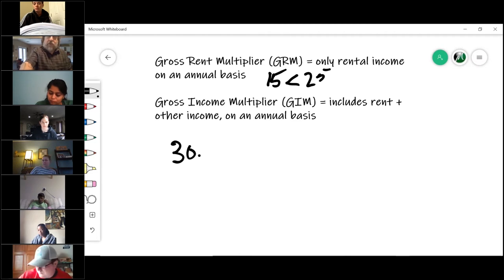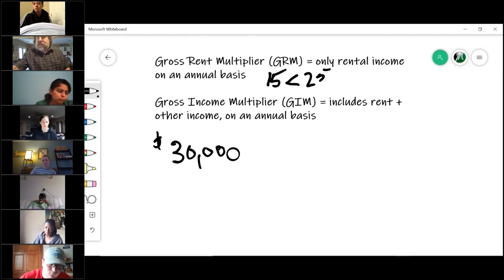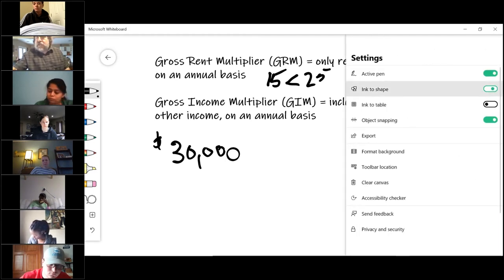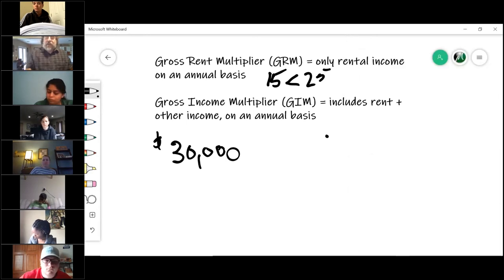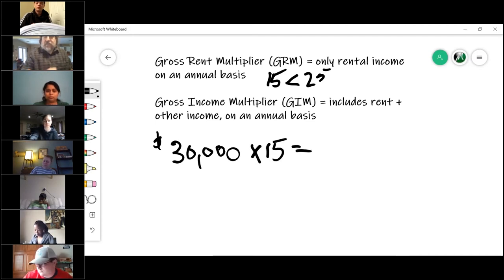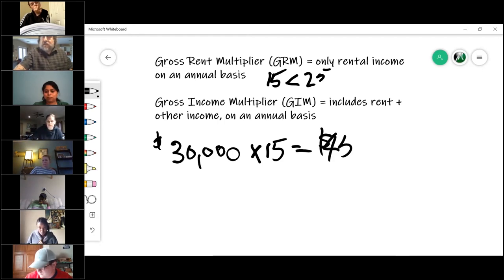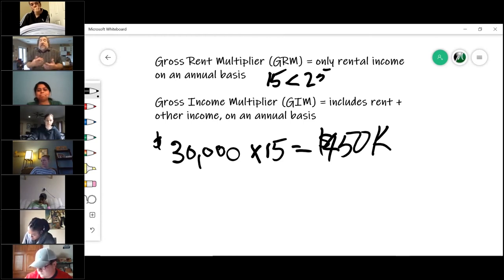That property a minute ago had $30,000 gross income. Now, the key to this is that it is gross income. Before, remember, we used net income. Now we are using gross income. Now we are using gross income. And you would literally take it times the multiplier, 30,000 times 15. The value of this property is $450,000. It's literally that simple.